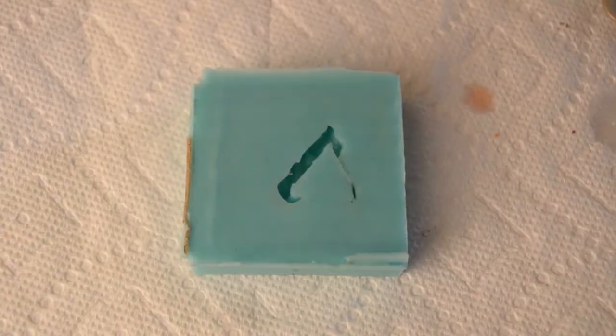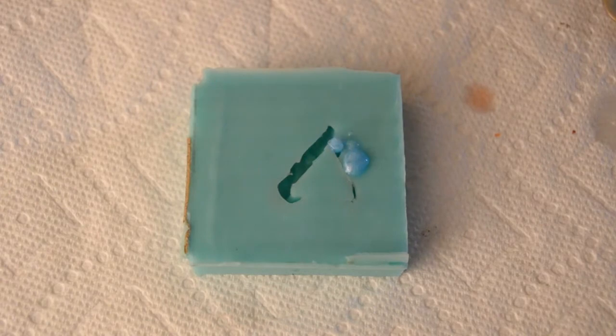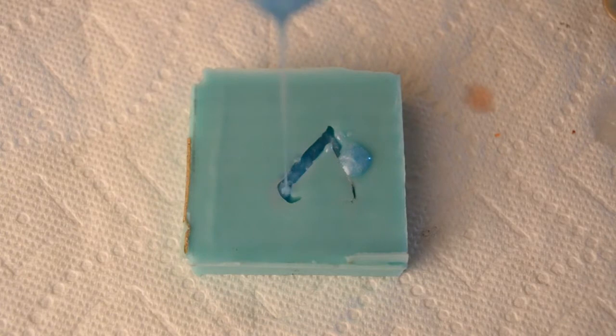Once the pigment was mixed into the resin, it was time to pour it in the diamond charm mold I'd made. I poured it from a height to help alleviate any bubbles I created when mixing the resin, much like the molding process.